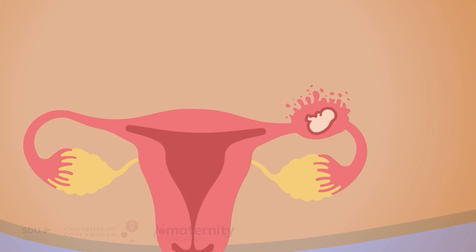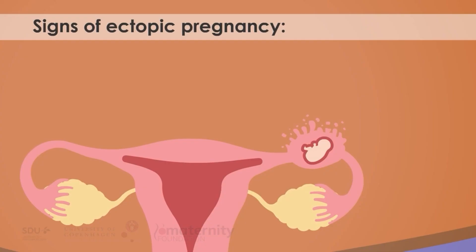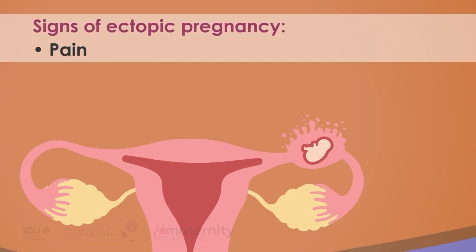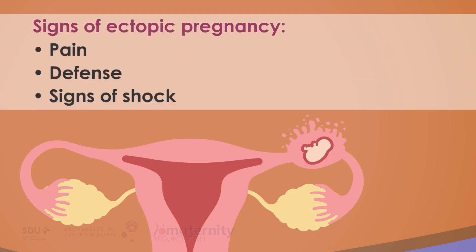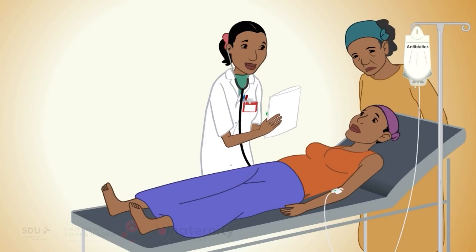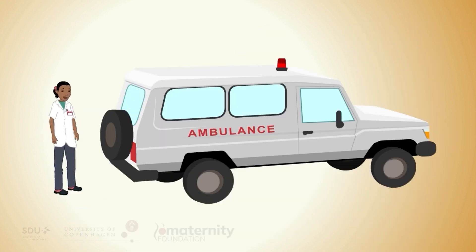If an ectopic pregnancy is detected, she should be referred to a health facility where surgery is available. If signs of a ruptured ectopic pregnancy — pain, defense, signs of shock — referral or surgery must not be delayed. The woman must be stabilized with intravenous fluids and accompanied by a health professional.